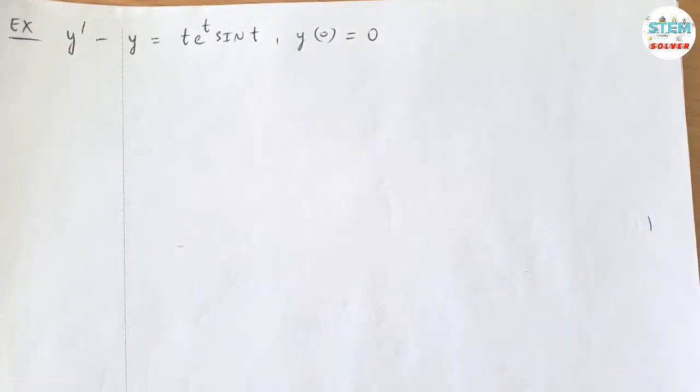Find the Laplace transform of the initial value problem y prime minus y equals t e to the t sine t, and you are given y of 0 equals 0.